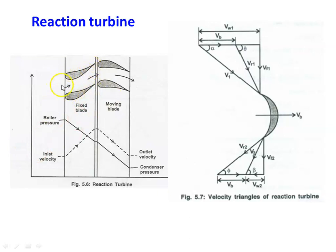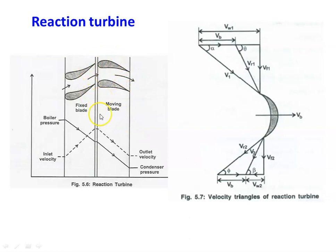The flow passage for steam between the blades is like a converging-diverging nozzle, both in the fixed and moving blades. When steam flows through the fixed blade there is a pressure drop — for example, 50% pressure drop in the fixed blade. Correspondingly, velocity increases and the steam enters the moving blade at higher velocity and pressure. In the moving blade, work is produced due to the decrease in velocity and decrease in pressure, contributing both change in kinetic energy and change in pressure energy.